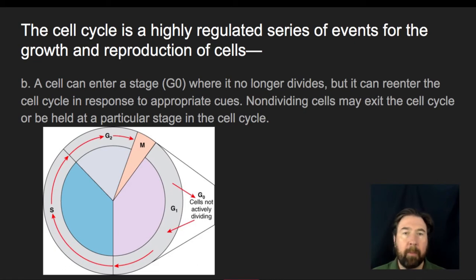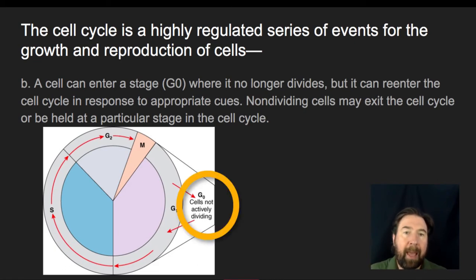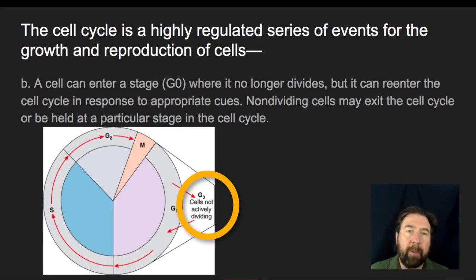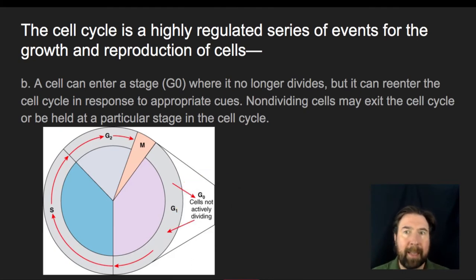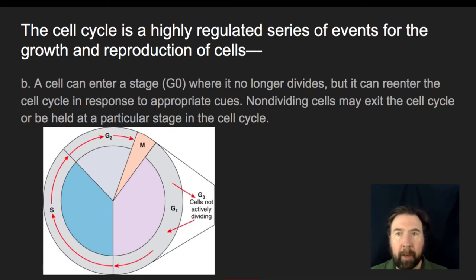So they're going to pop out into what we call the G0 phase. G0 contains cells that are not actively dividing and not proceeding through the cell cycle — they're in a sort of frozen state from a cell cycle standpoint. But in many instances, we've learned that you can have these cells re-enter the cell cycle if they were to respond to appropriate cues.